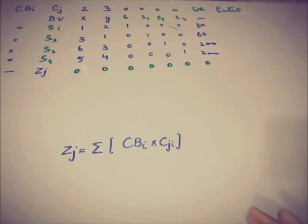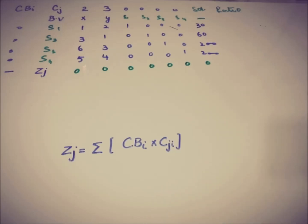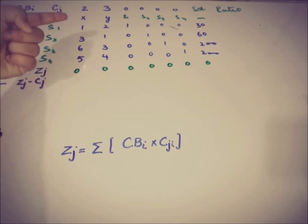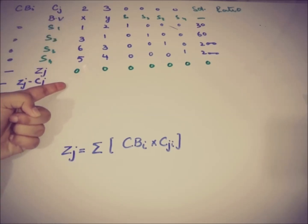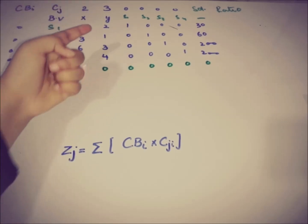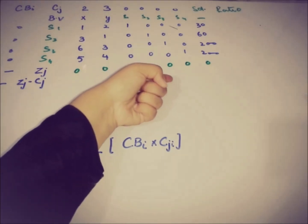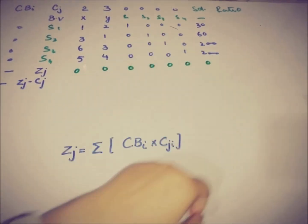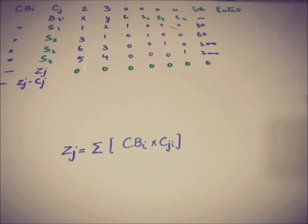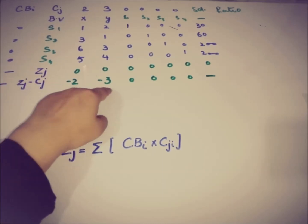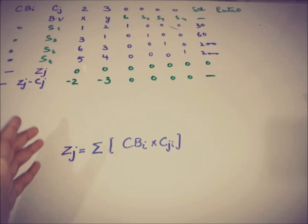The next step is computing Zj minus Cj. Zj is 0 and Cj is 2, so 0 − 2 = −2. Then 0 − 3 = −3. And 0 − 0 = 0 for each of the remaining slack variable columns.